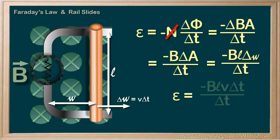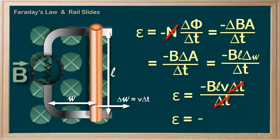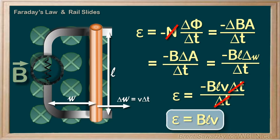Putting this together, our EMF equals negative BL times the velocity of the slide times the change in time over the change in time — and the time terms cancel out. So our EMF equals BLV. That should look familiar — it's the exact same formula we would have used analyzing this rail slide with our Motional EMF method. It's always comforting to confirm that our physics concepts are consistent and agreeing.